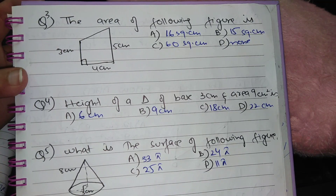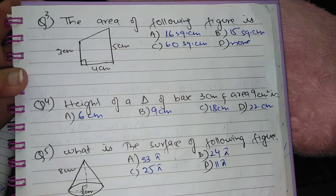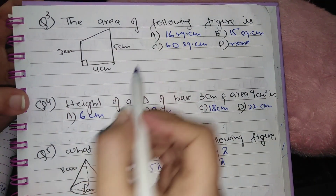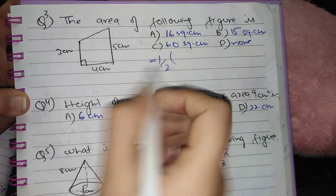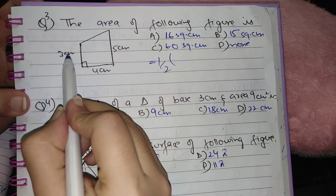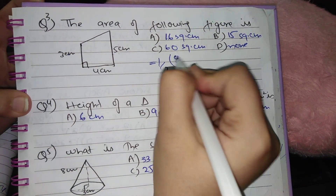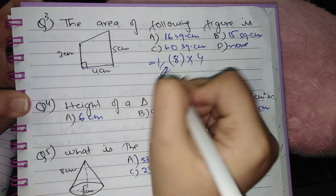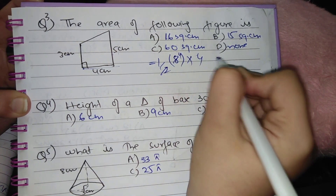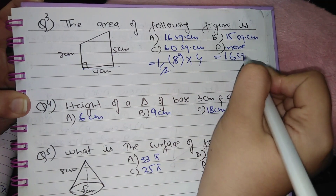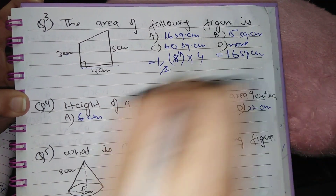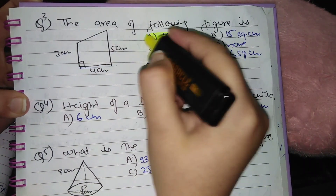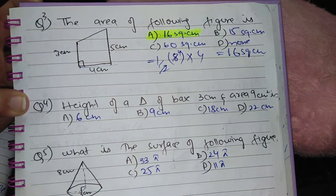Question 3: Find the area of the following figure, which is also a trapezium. Area = ½ × (sum of two parallel sides) × height = ½ × (5 + 3) × 4 = ½ × 8 × 4 = 16 square centimeters. Option A is the correct answer.